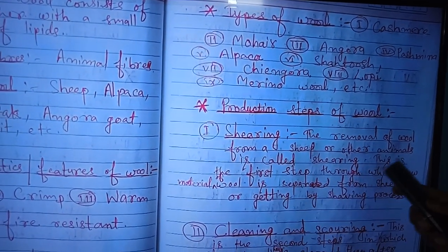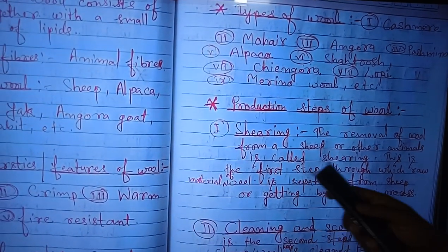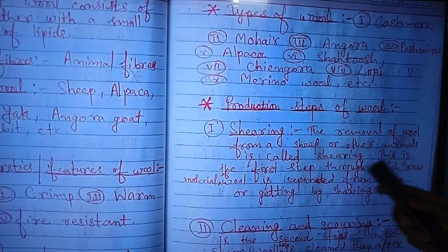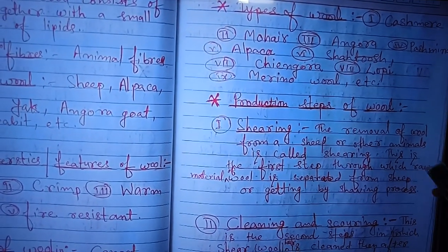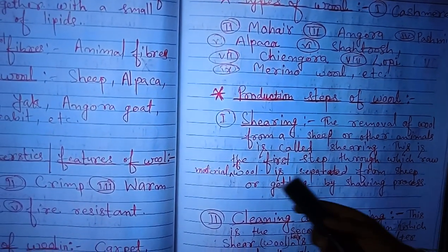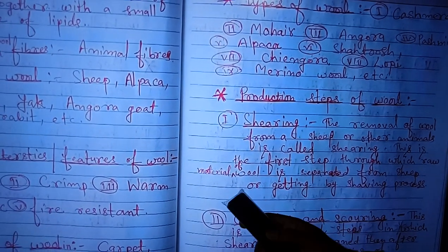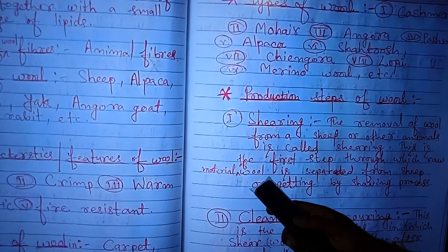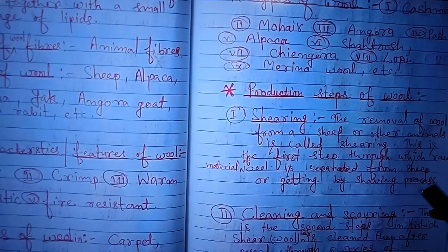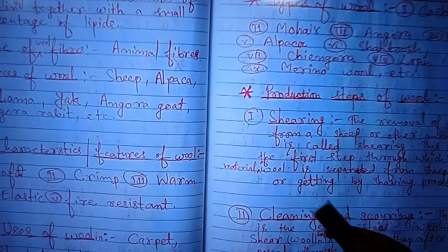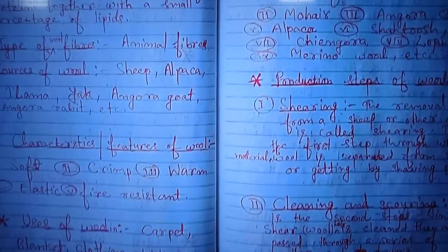First: shearing. The removal of wool from a sheep or other animals is called shearing. This is the first step through which the raw material of wool is separated from the sheep or goat by the shaving process.